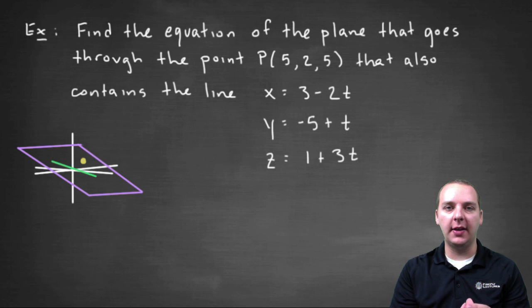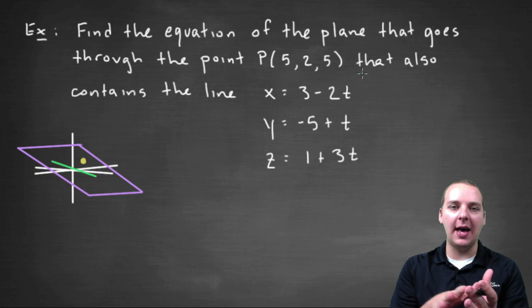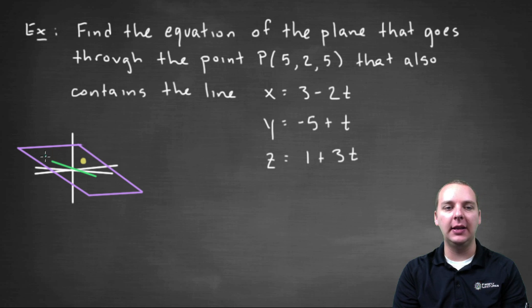In this exercise we're being asked to find the equation of a plane that has a few unique properties. It says that your plane contains the point P, which is the point (5,2,5), and there's also a line that they tell us is embedded in that plane, which means it runs inside of that plane.